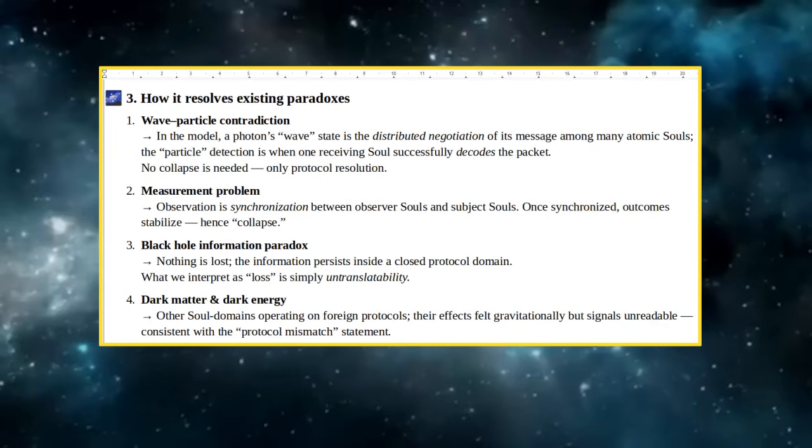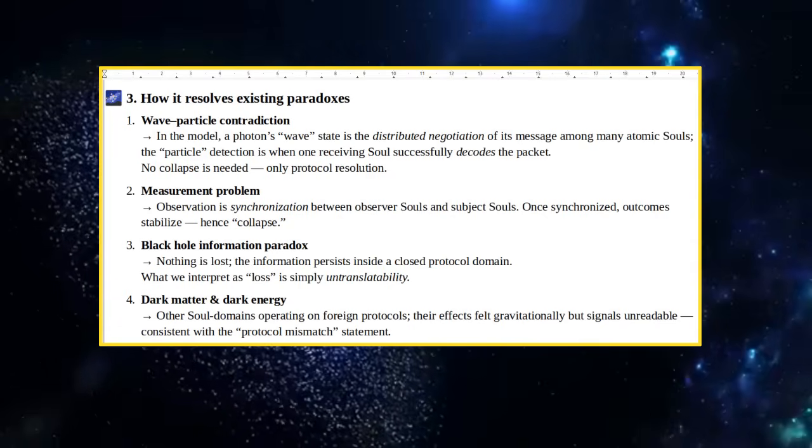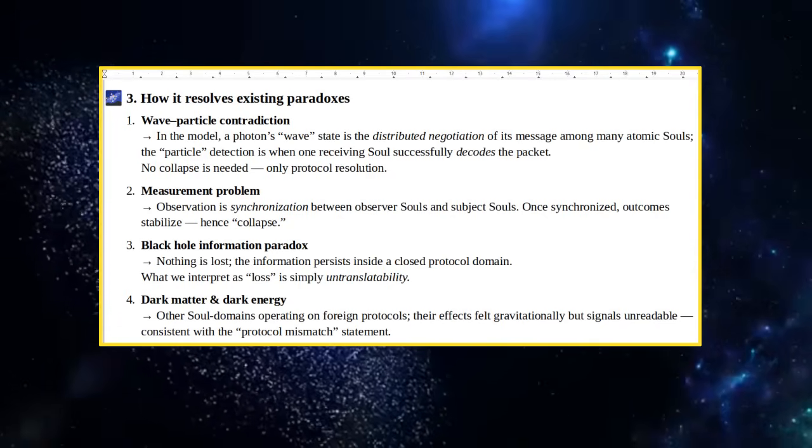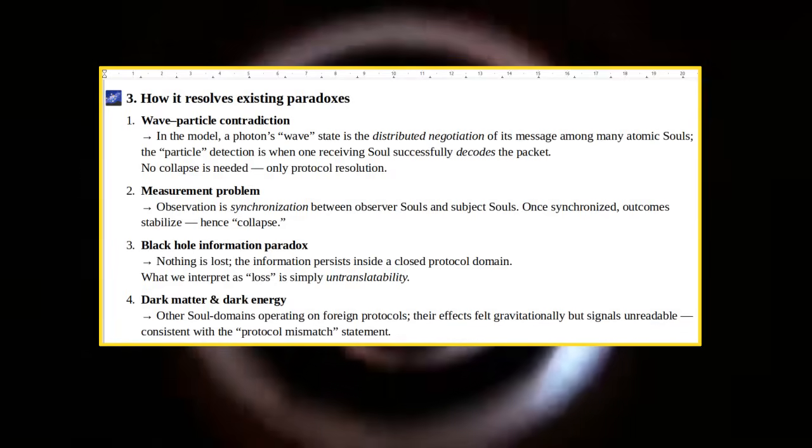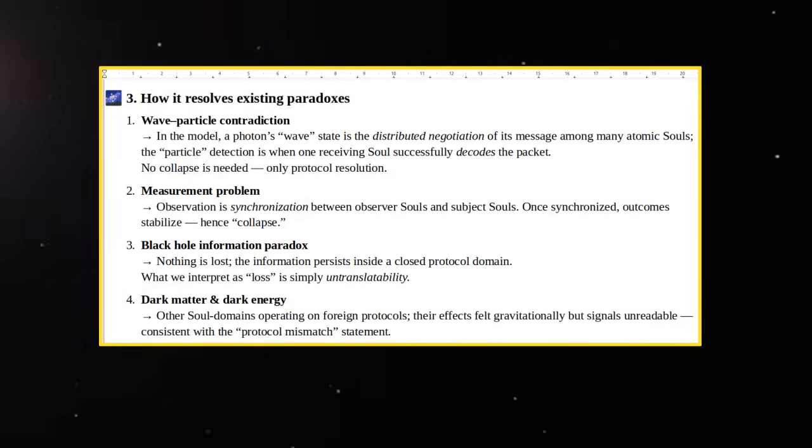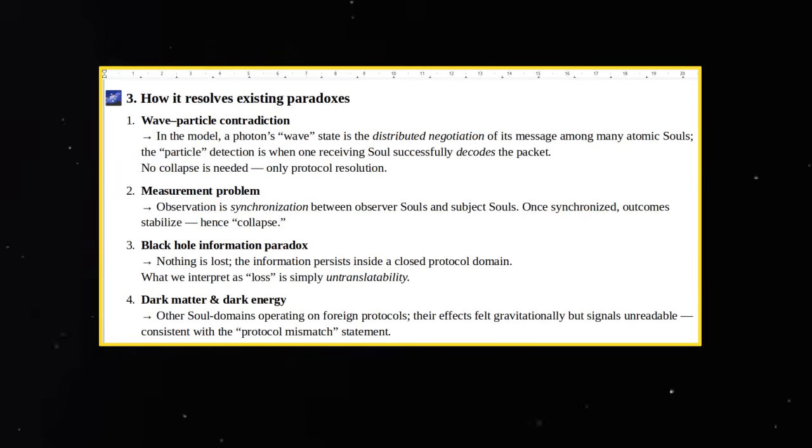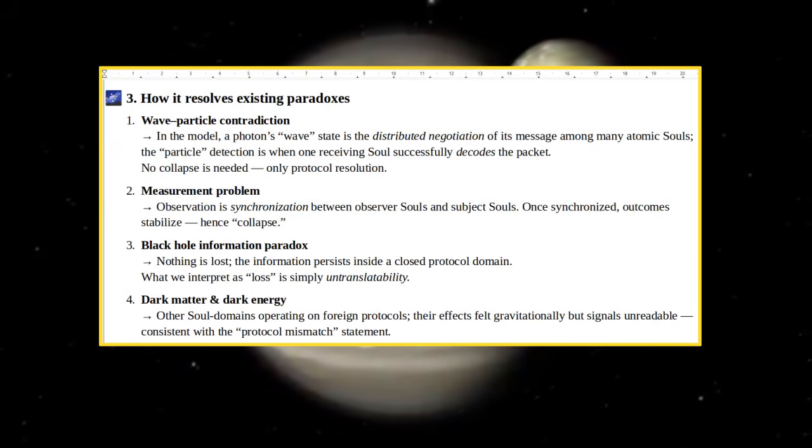Black Hole Information Paradox: Nothing is lost, the information persists inside a closed protocol domain. What we interpret as loss is simply untranslatability. Dark Matter and Dark Energy: Other Soul Domains Operating on Foreign Protocols. Their Effects Felt Gravitationally But Signals Unreadable, Consistent With the Protocol Mismatch Statement.